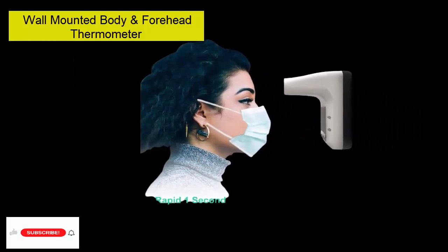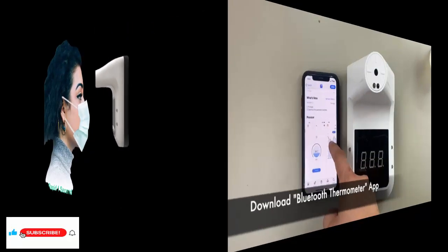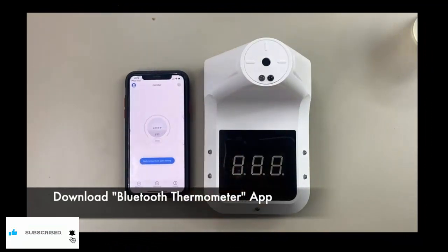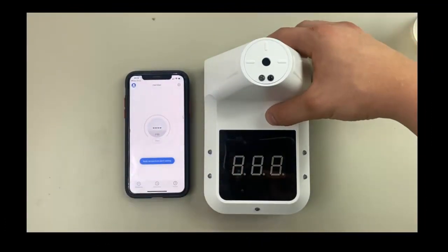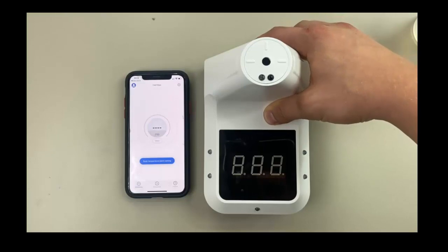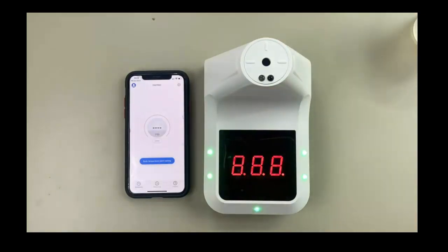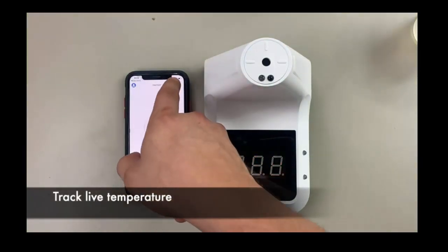Simply place the forehead 2 to 4 inches away from the thermometer to get the best reading. Normal temperature reading is signaled by green light. High temperatures are signaled by red light followed by an alarm. Non-contact body temperature is detected within 2 to 4 inches from the thermometer.